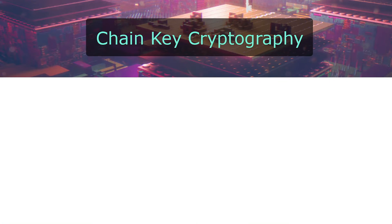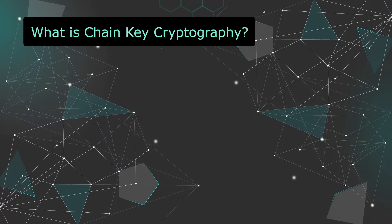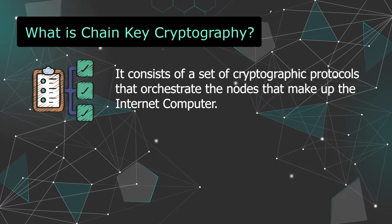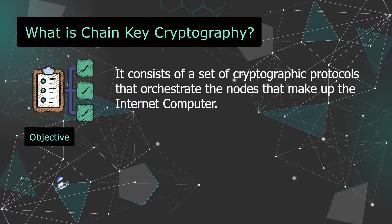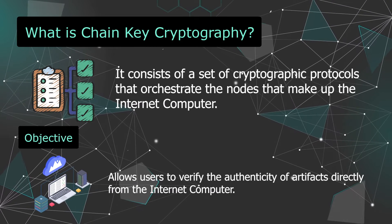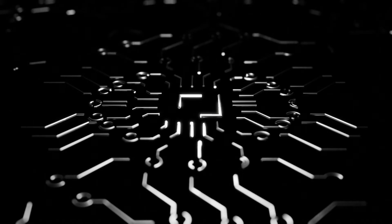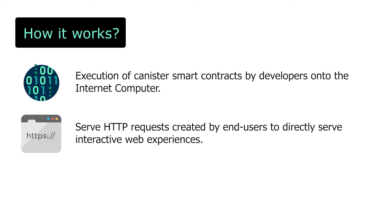Eventually, it will run millions of nodes at scale with the help of chain-key cryptography. This fundamental breakthrough consists of a set of cryptographic protocols that orchestrate the nodes making up the Internet Computer. It's also unnecessary for anyone to download blockchain states to verify the correctness of transactions. Virtually any software can be hosted on this blockchain, stored as secure code units called canisters — an advanced form of smart contracts — which can serve HTTP requests created by end-users to directly serve interactive web experiences.